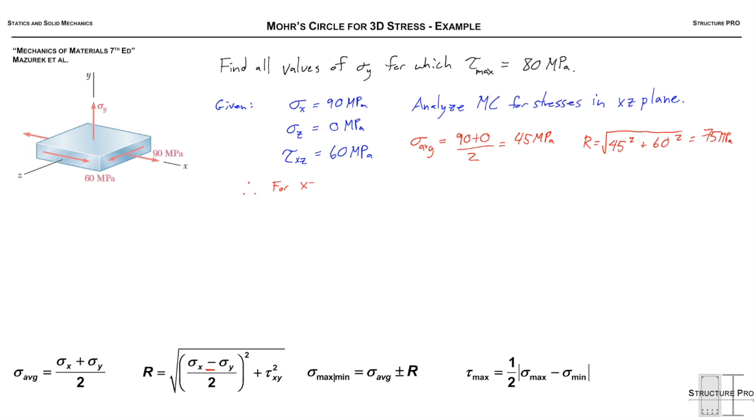Since we have Sigma average and R, we can say that for the XZ plane, Sigma max is 45 plus 75, or 120 MPa, and Sigma min is 45 minus 75, so in this case that's negative 30 MPa. We've fully analyzed this XZ plane and found the principal stresses on it.